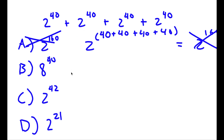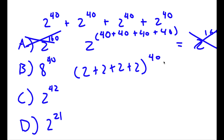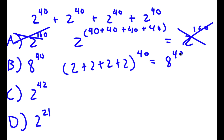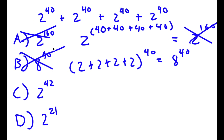For answer choice B, 8 to the power of 40, you keep the exponent the same and add the bases: 2 + 2 + 2 + 2 = 8, giving 8 to the power of 40. But this method is also wrong — you can't simply add the bases altogether.